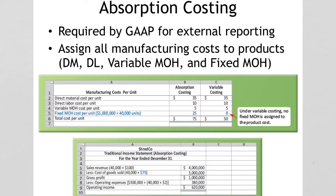Let's start our conversation with absorption costing. Absorption costing is what you're most used to seeing. This is required by GAAP and it assigns all of the manufacturing cost to your product costs. Remember, product costs were direct materials, direct labor, and overhead. So under absorption costing, cost of goods sold absorbs all of our product cost.